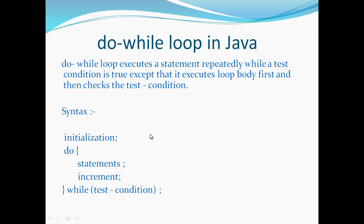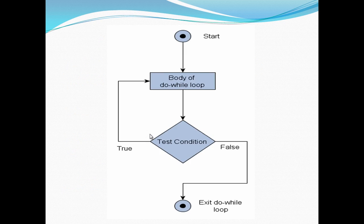If we look at the flowchart of the do-while loop, we see that it starts with the execution of the body of the do-while loop, and then it checks the test condition. If the test condition comes out to be true, then the body of the do-while loop again gets executed, and this continues until the test condition is true. As soon as the test condition comes out to be false, the do-while loop is terminated and the flow of control goes to the statements after the do-while loop and proceeds to further execution.